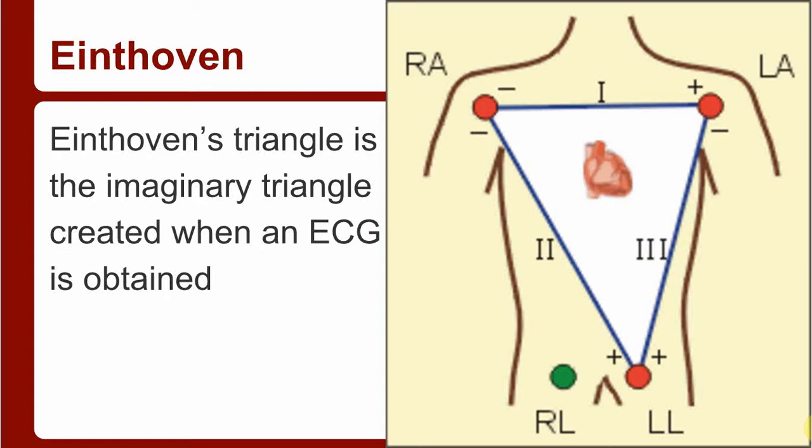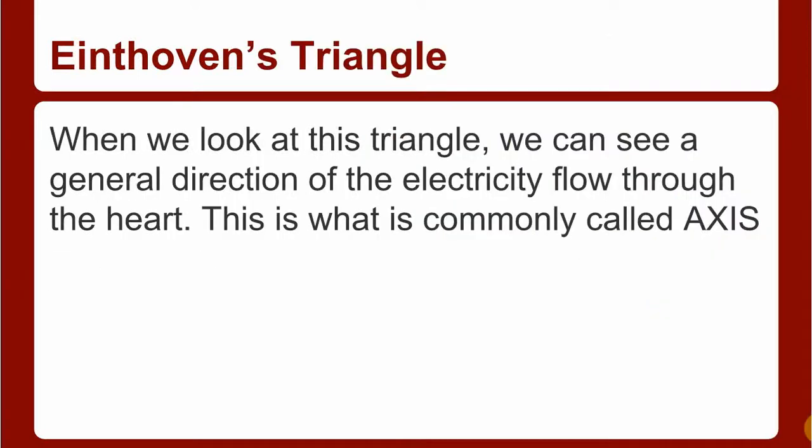We have to go down to the basics, so you guys remember Einthoven's triangle when you went through cardiology. It's the imaginary triangle created when an ECG is obtained, and when we look at this triangle we can see a general direction of the electricity and how it flows through the heart. This is what's commonly called axis.